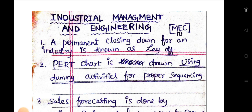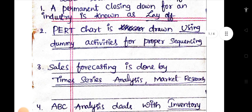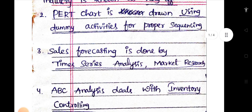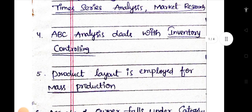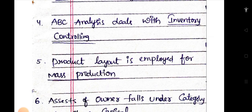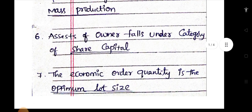Coming to the topics — first question: a permanent closing down of an industrial unit is known as layoff. PERT chart is drawn using dummy activities for proper sequencing. Sales forecasting is done by time series analysis and market research. ABC analysis deals with inventory controlling. Product layout is employed for mass production. Assets of working capital are under the category of share capital. The economic order quantity is the optimum lot size.